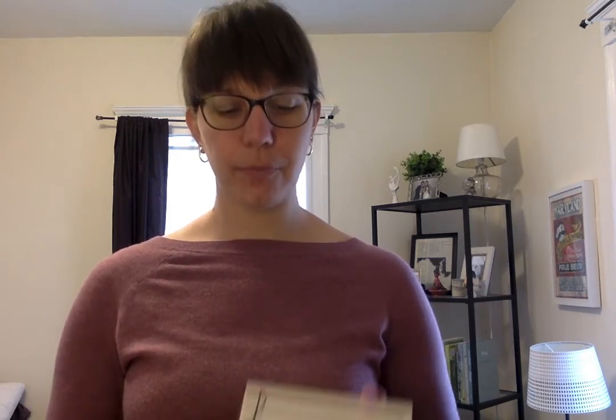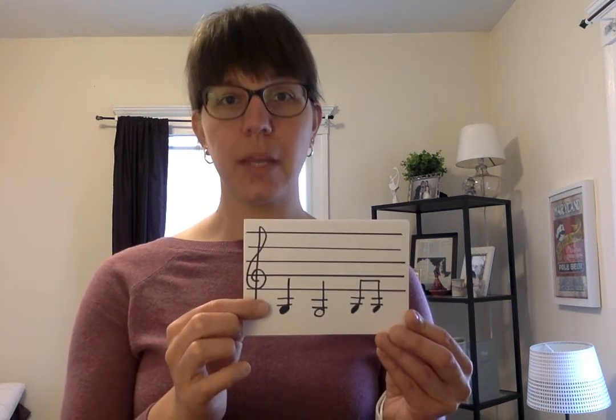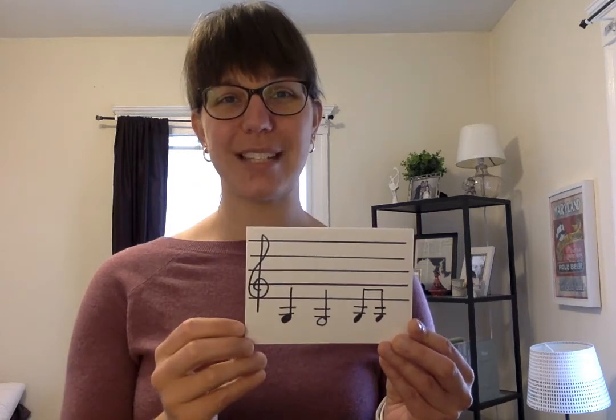Our last open string for the violin is our G string. And since it sounds the lowest, it's also the lowest on the staff. We have to draw two extra lines for the G. These two little lines are called ledger lines, and you can use them when the notes go below the staff or up above the staff.